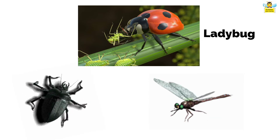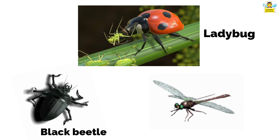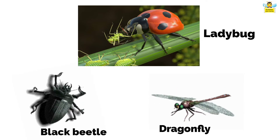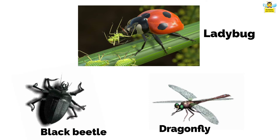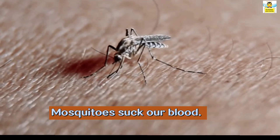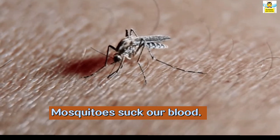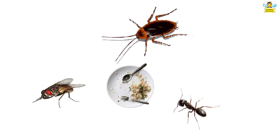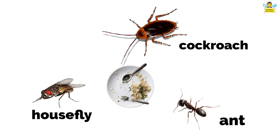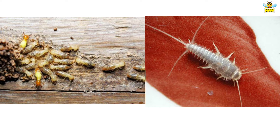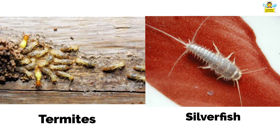Ladybug, black beetles and dragonfly eat other small insects. Some insects like mosquitoes suck our blood. Some insects like housefly, cockroach and ant eat leftover food.